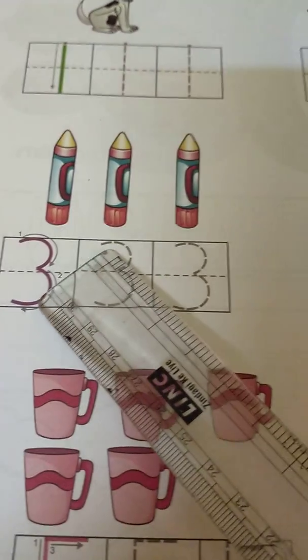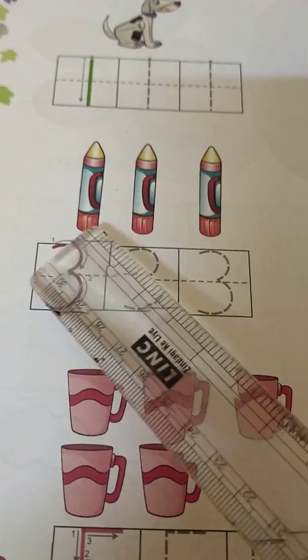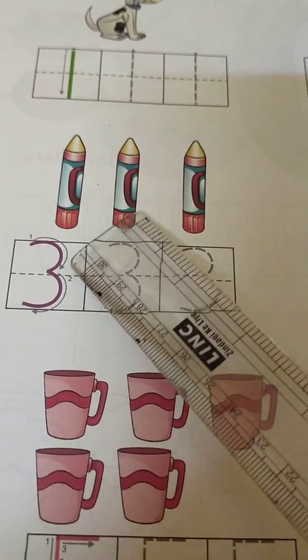How many crayons are there? One, two, three. So you write over here, three.